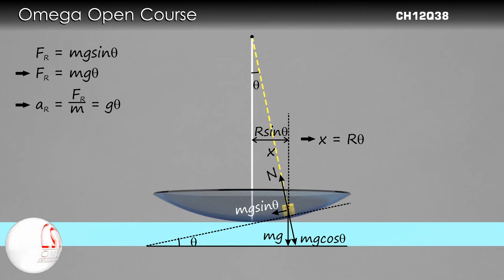To find the angular frequency of oscillation, we need to find restoring acceleration as a function of displacement from the equilibrium position. Restoring acceleration is g theta, or g times R theta divided by R, or g by R times x.